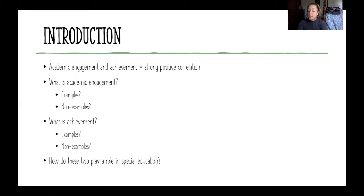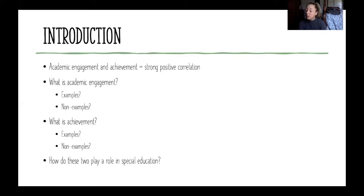A non-example: say student B is an ELL, an English language learner, and they're working in language arts. His teacher provides strategies to help him comprehend the reading assignments, but the student is still not able to grasp the material. Basic understanding of the material is not achieved — that's a non-example of achievement.